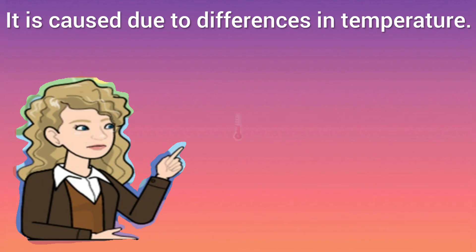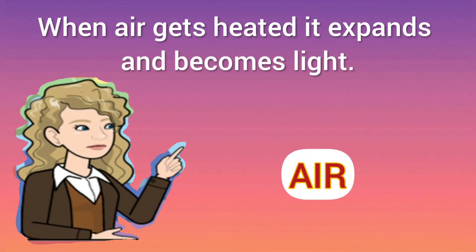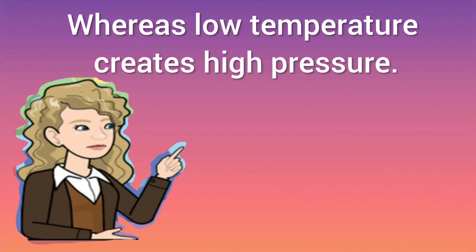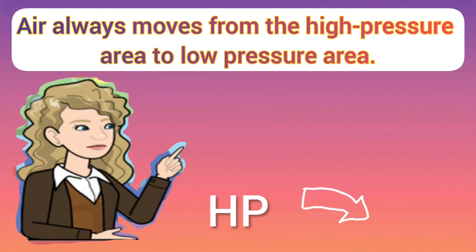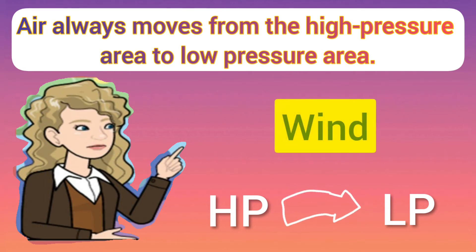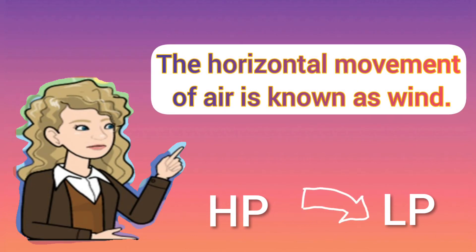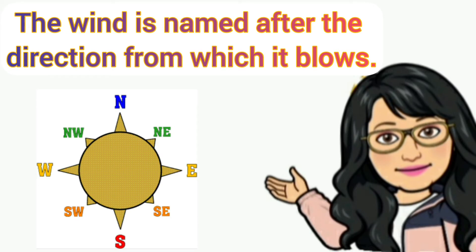Differences in pressure are caused by differences in temperature. Always remember that high temperature creates low pressure, because when air gets heated it expands and becomes light. Low temperature creates high pressure areas. Air always moves from the high pressure area to the low pressure area. The moving air is known as wind.